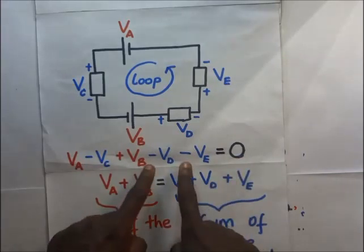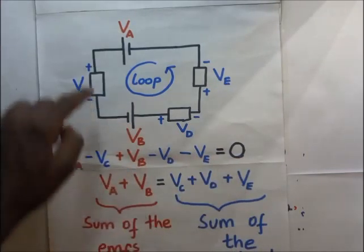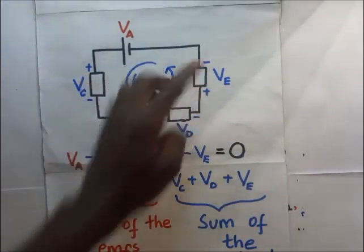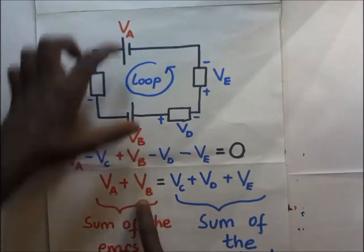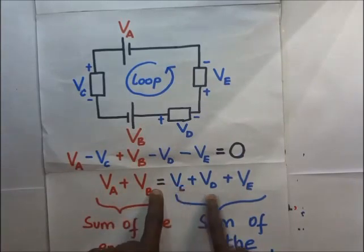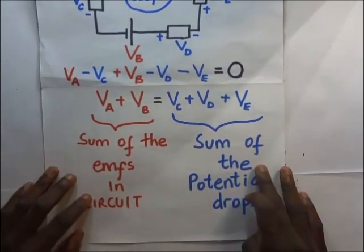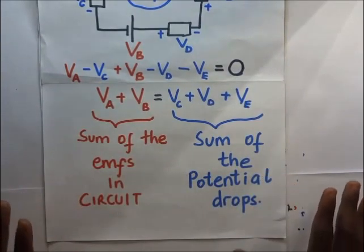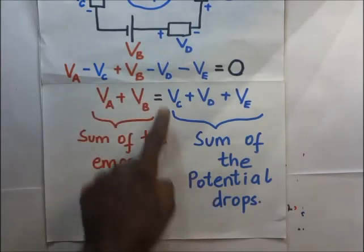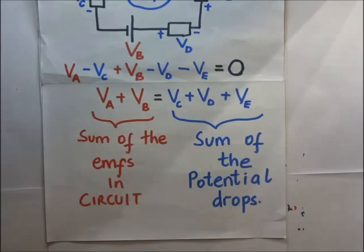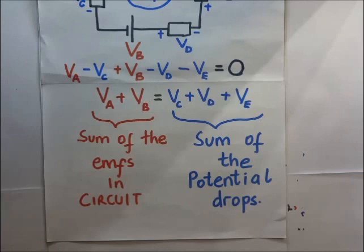If we arrange the EMFs on one side and the resistances or potential drops on the other side, then we have VA plus VB — which are the EMFs in this loop — equal to the sum of the potential drops. That is basically Kirchhoff's law: the sum of the EMFs in the circuit is equivalent to the sum of the potential drops in that same circuit. In our upcoming videos we shall look at examples that will require us to use Kirchhoff's laws.